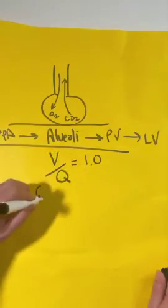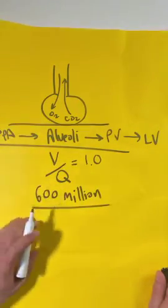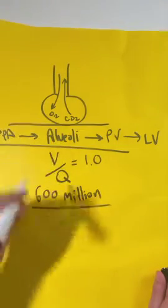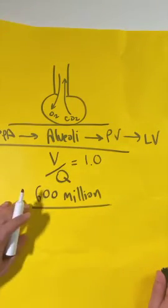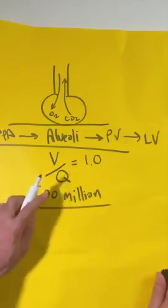Just know that there are 600 million of these alveolar units within your lung all participating in gas exchange, and if you take them all, flatten them out end to end, this would be the size of a tennis court. That is a tremendous amount of ventilation and perfusion that's happening in your lung right now.